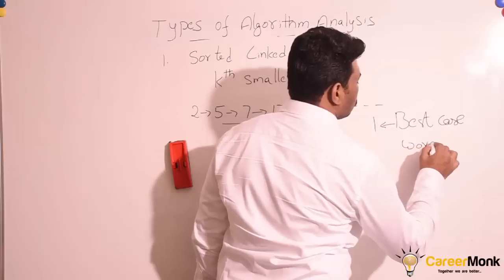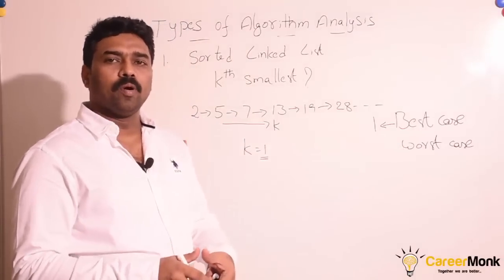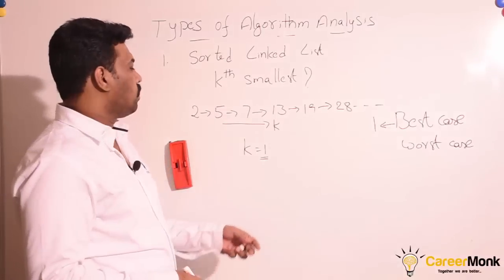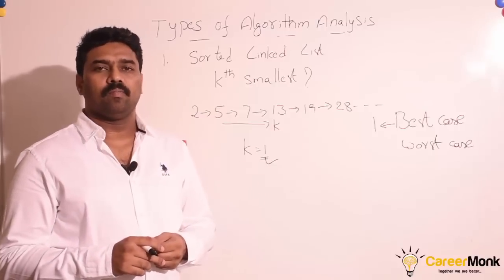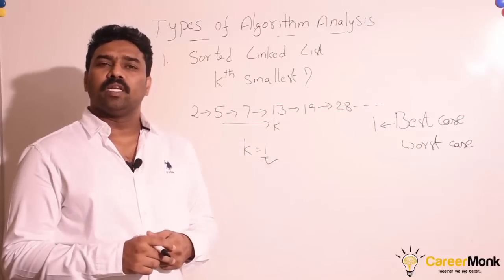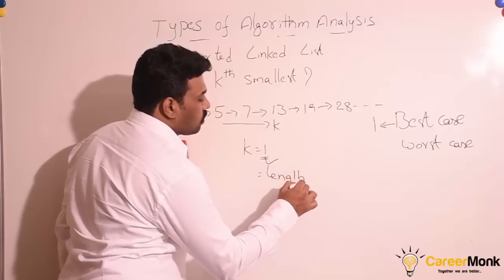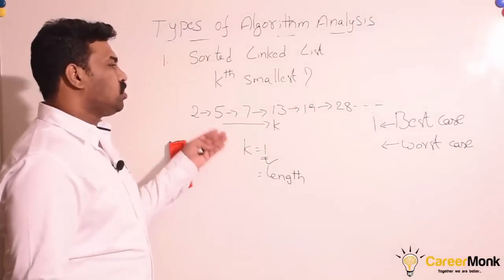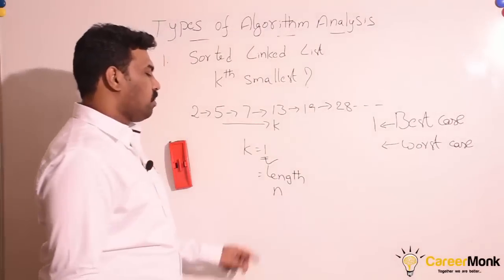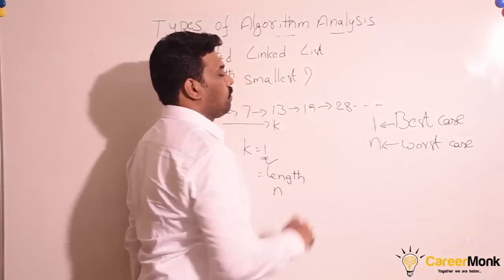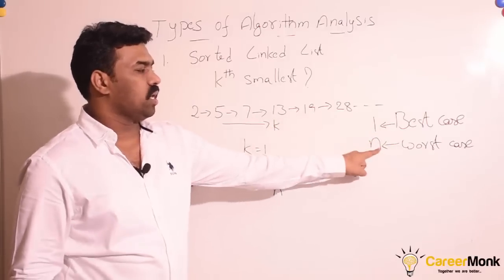Now let us go to the worst case. From the definition of worst case, we need to find the input for which the algorithm consumes more memory and CPU. Since the elements are in increasing order, if we increase the k value, the CPU time will increase — we are increasing the number of iterations. So for k equal to the length of the linked list, we get the maximum number of iterations, which is the worst case. Since we do not know the number of elements in the linked list, let us assume n is the number of elements. So the running time in the worst case is n, and in the best case is 1.